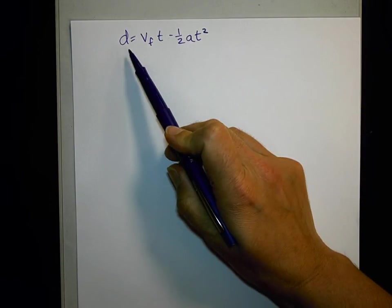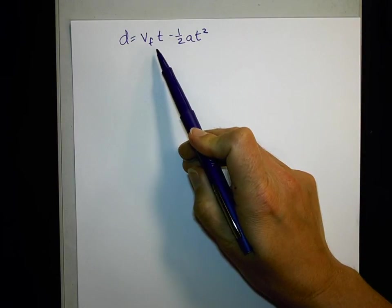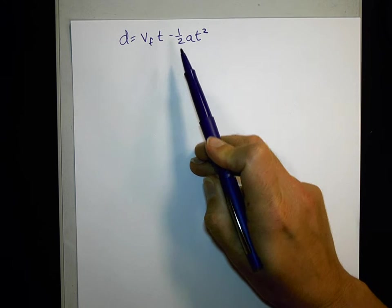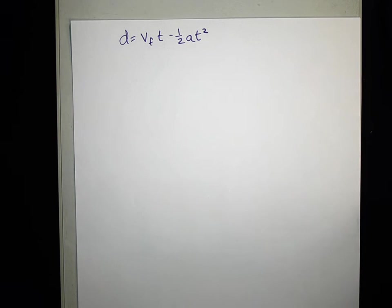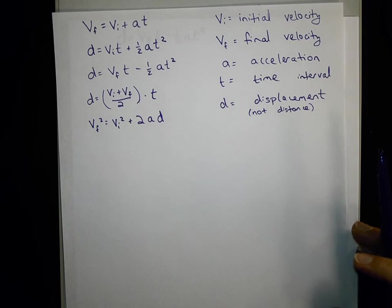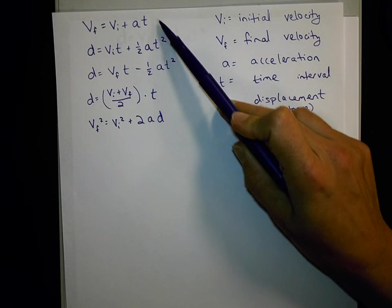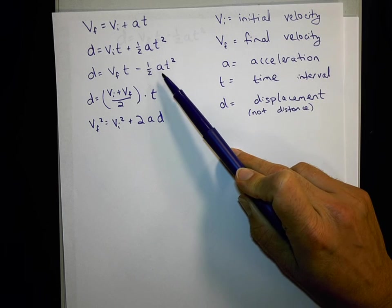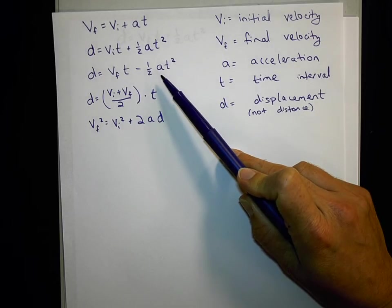In this video, I want to derive the equation d equals vf times t minus one-half a t squared. This is one of our big five equations that describe constantly accelerated motion. We've got five equations that do it. We're going to go ahead and describe and derive this third equation.